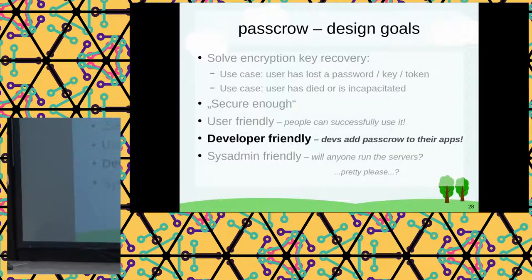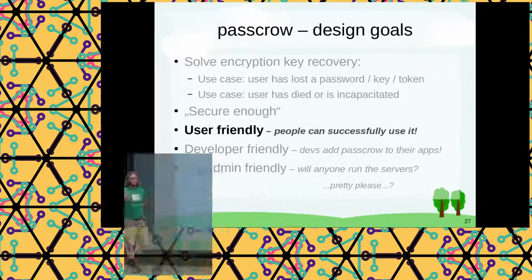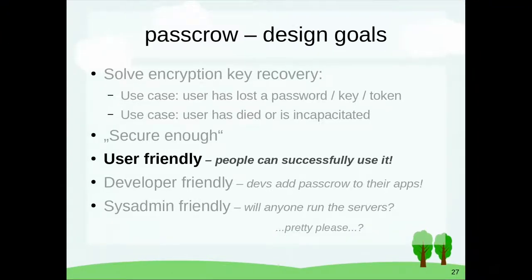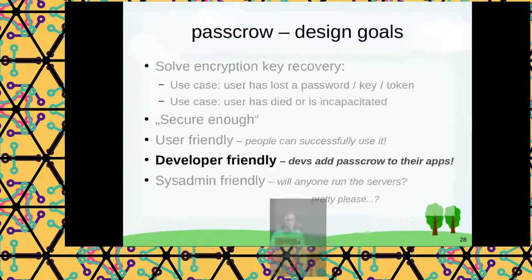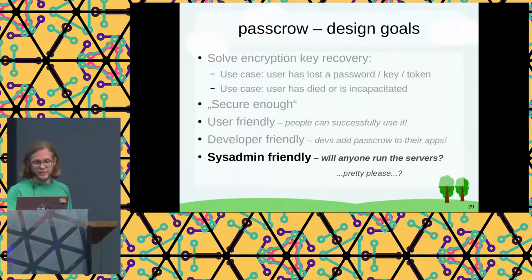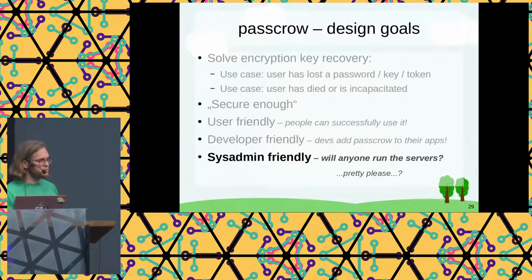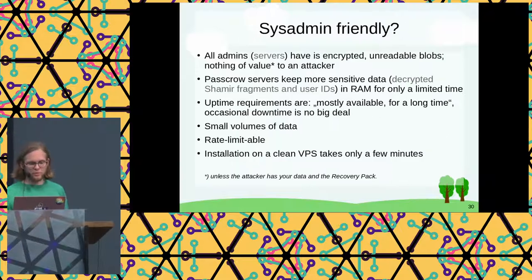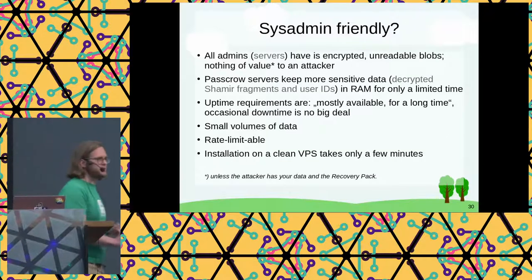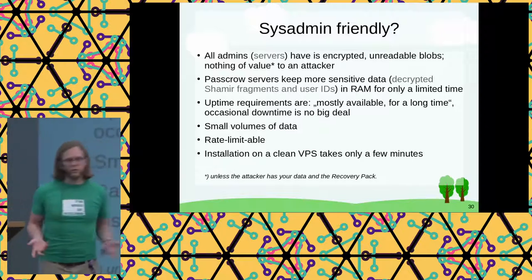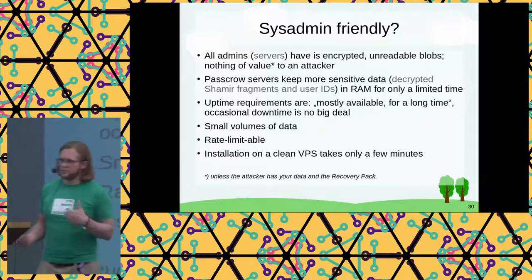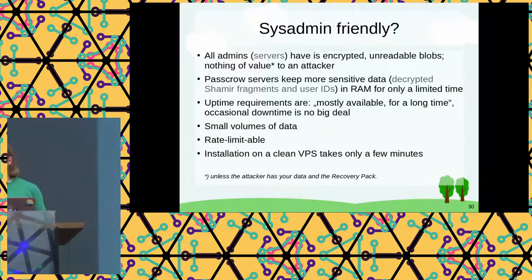User-friendly: the main thing that makes this user-friendly is that this is a really familiar pattern. We already know how to do this — we don't have to teach users new stuff, we just have to add these options to our software. Developer-friendly: docs, stuff — I don't know if I'm succeeding at this yet, maybe you can tell me. And system-friendly: I've made sure admins don't feel at risk. They don't have data that has value, they don't know who their users are — their users are anonymous. So there's limited gain in hacking a PassCrow server.